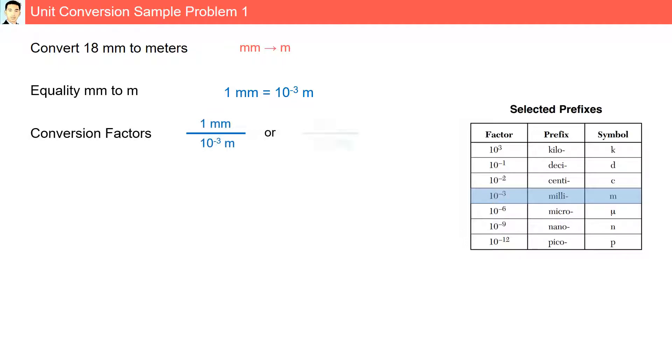Our conversion factors are 1 millimeter over 10 to the minus 3rd meter or 10 to the minus 3rd meter over 1 millimeter. Here we are going to convert from 18 millimeters. So let's try the first conversion factor, 1 millimeter over 10 to the minus 3rd. The millimeters cannot cancel the meters. Therefore, we cannot use this conversion factor.